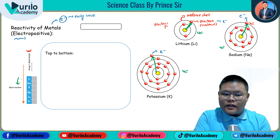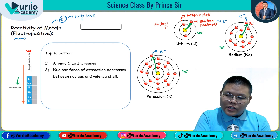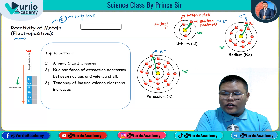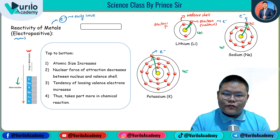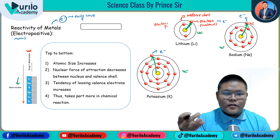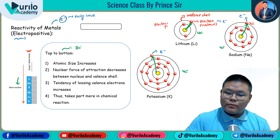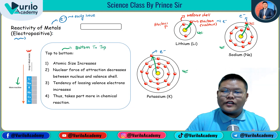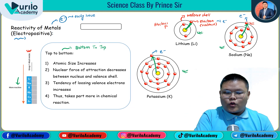So this is how we explain reactivity in the exam. Going from top to bottom — lithium, sodium, potassium — the atomic size increases, and the nuclear force of attraction decreases, because the distance between the nucleus and the valence electron in the valence shell increases. Therefore, the tendency of losing the electron increases, and they take more part in chemical reactions. Going bottom to top, reactivity decreases; going top to bottom, chemical reactivity increases. Remember this concept for metals.